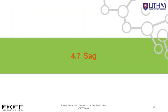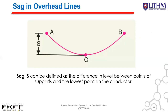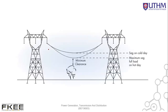Now we look at sag. Sag is the difference in level between the points of support and the lowest point on the conductor — i.e., how much the conductor droops. For example, between tower A and tower B, the conductor in the middle is the lowest point — that distance is the sag. Sag can vary depending on weather: on a cold day it is less, on a hot day the conductor sags more due to thermal expansion. There must always be a minimum clearance between the sag and objects below (trees, ground).